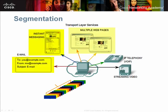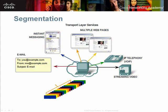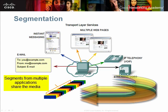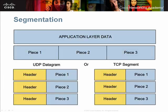These include email, instant messaging, multiple web pages, IP telephony, and streaming video. Each type of traffic is represented by a different colored arrow. The transport layer maintains these communication streams by dividing the application's data into small parts called segments and interleaving these segments across the network media.